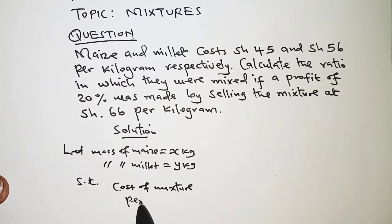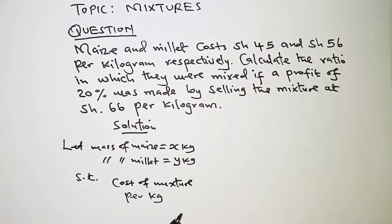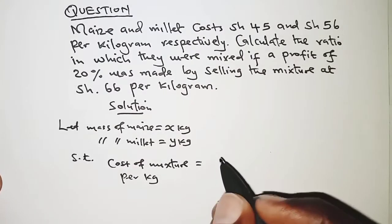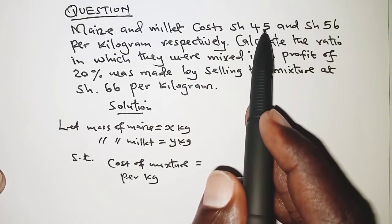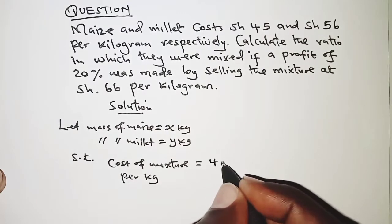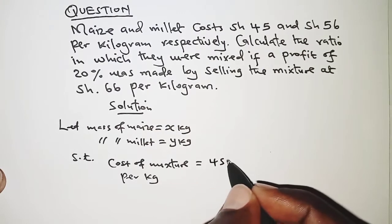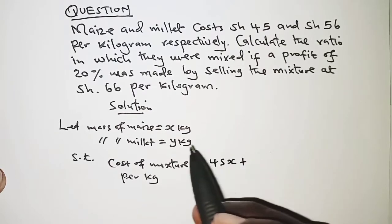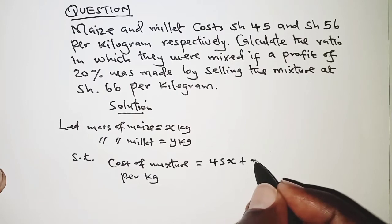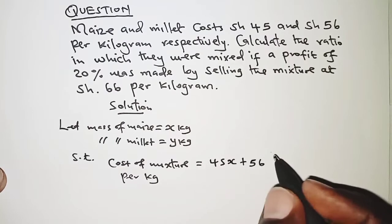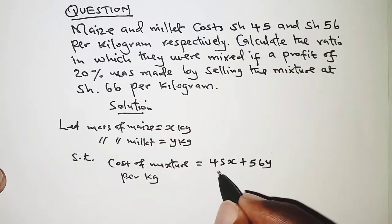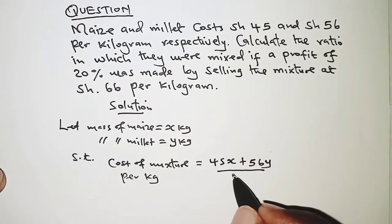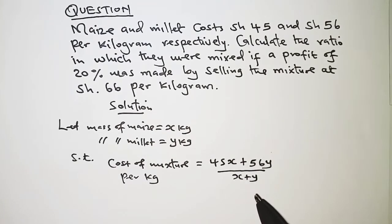So the cost of mixture per kilogram will be given by the total cost for the mixture. We have 45 shillings per kilogram for maize, so we multiply 45 shillings by x kilograms, plus the cost of millet, which is 56 per kilogram times y kilograms. Then to get per kilogram we divide by the total mass which is x plus y.